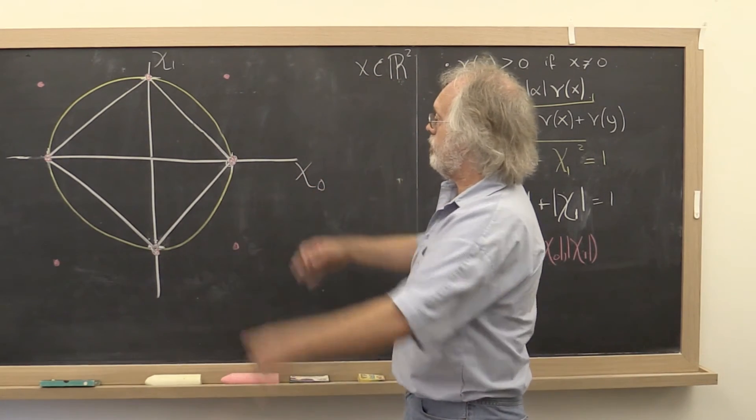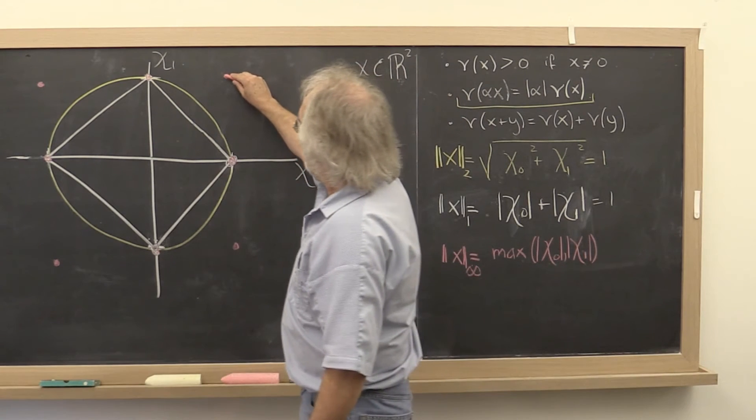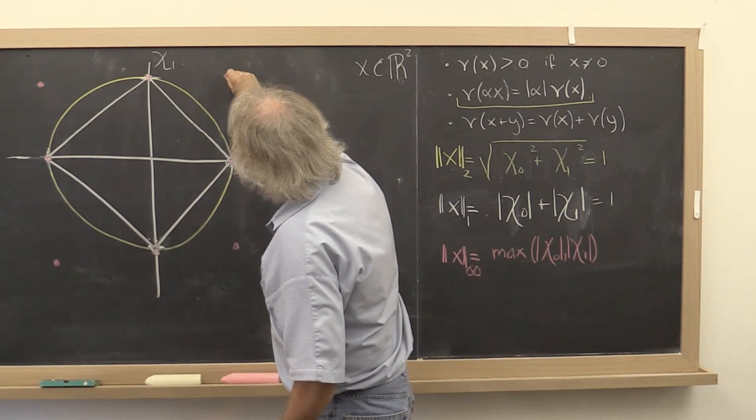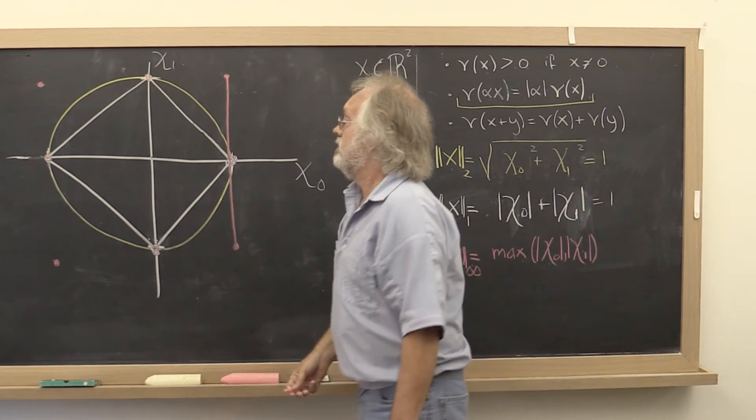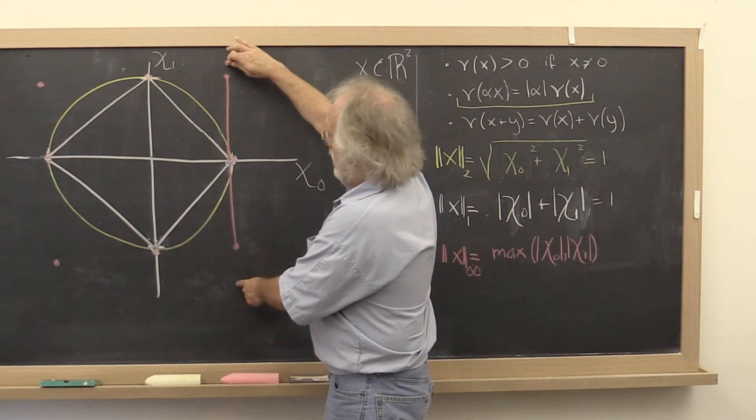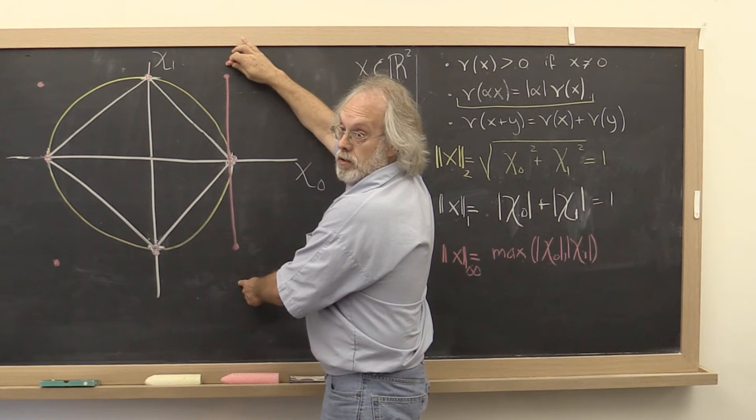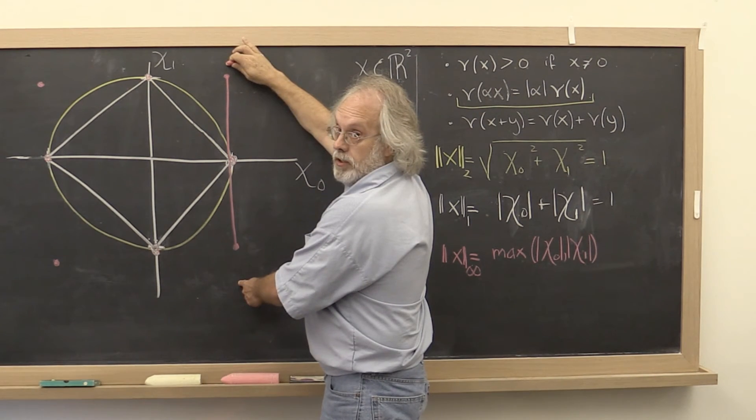And if you kind of reason through it that way, you find out that all points such that chi is equal to 1 and chi is between minus 1 and 1 are in the set.